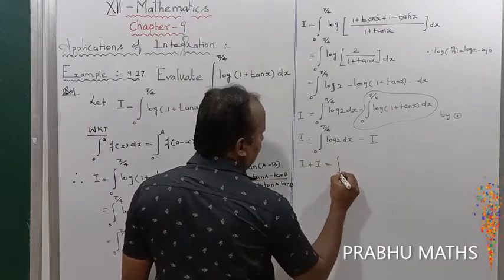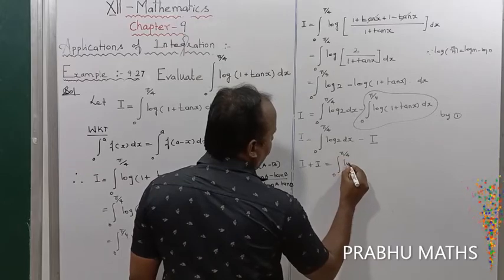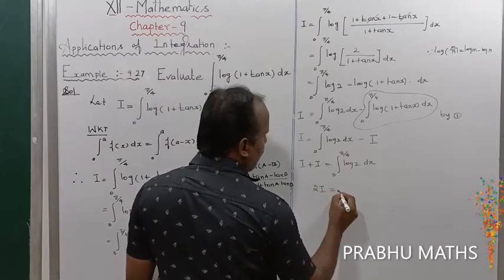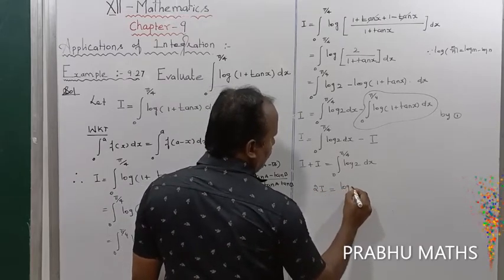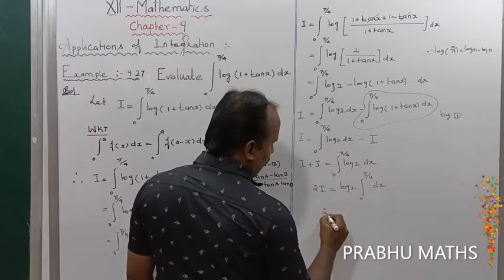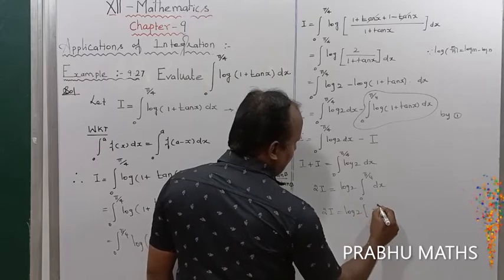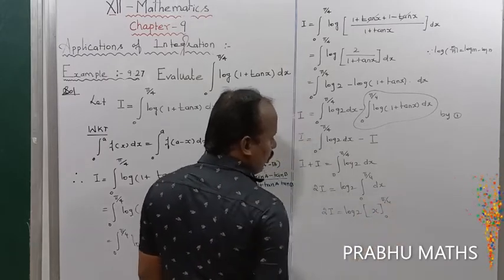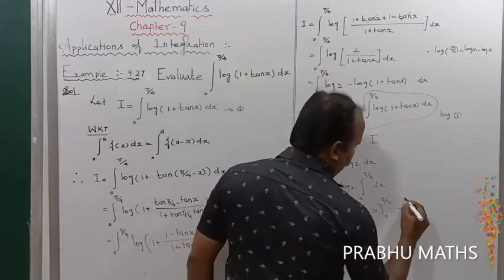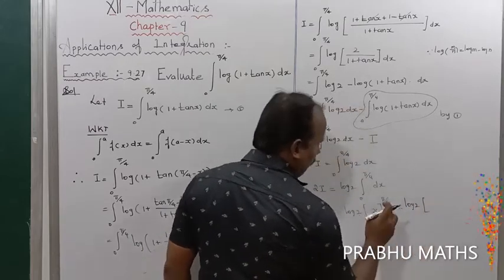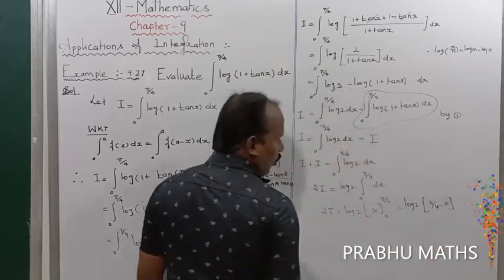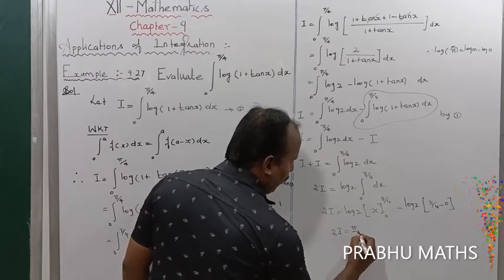So I + I equals integral from 0 to π/4 of log 2 dx, giving 2I. Since log 2 is a constant, 2I equals log 2 times integral from 0 to π/4 of dx, which equals log 2 times [x] from 0 to π/4. Substituting the upper limit π/4 and lower limit 0: 2I equals (π/4) · log 2.